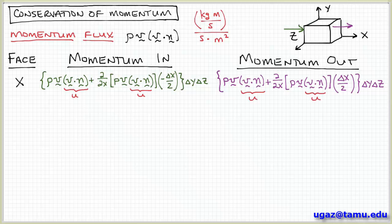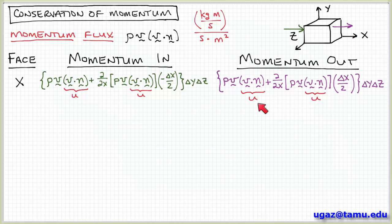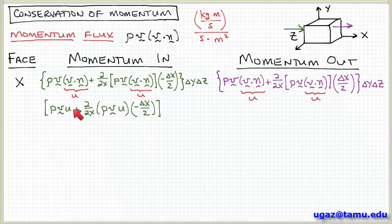I want to point out that v dot n — because our normal vector is in the x direction — automatically selects the x component of the velocity vector, u. So all these v dot n terms are actually u for faces that have a normal in the x direction. I can rewrite each expression by replacing v dot n with the scalar u, the x component of the velocity vector.